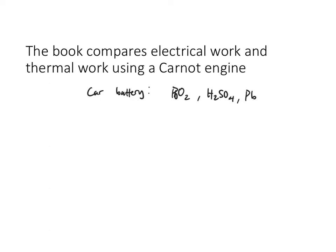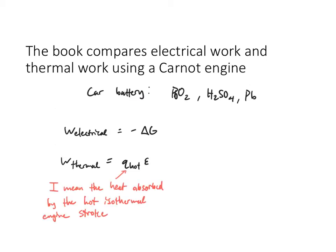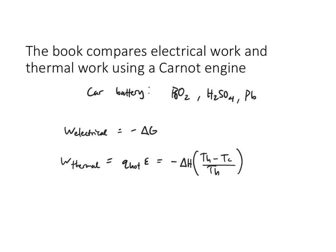They compare that to how much electrical work is capable of being done. The electrical work is equal to the negative delta G of the reaction, which we can calculate using the methods in this chapter. Compared to the thermal work, which equals the temperature of the hot reservoir times the efficiency of the engine, this section shows that thermal work equals delta H times (T_hot - T_cold) over T_hot.